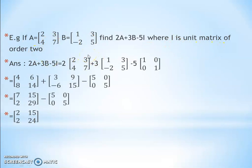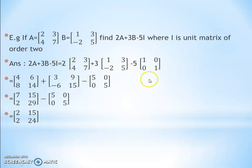We know the identity matrix for 2 by 2 is [1, 0; 0, 1]. Consider the expression 2A + 3B - 5I on the left-hand side. We write the A matrix as [2, 3; 4, 7], then plus 3 times the B matrix [1, 3; -2, 5], then minus 5 times the identity matrix [1, 0; 0, 1], which is a square matrix of order 2 by 2.